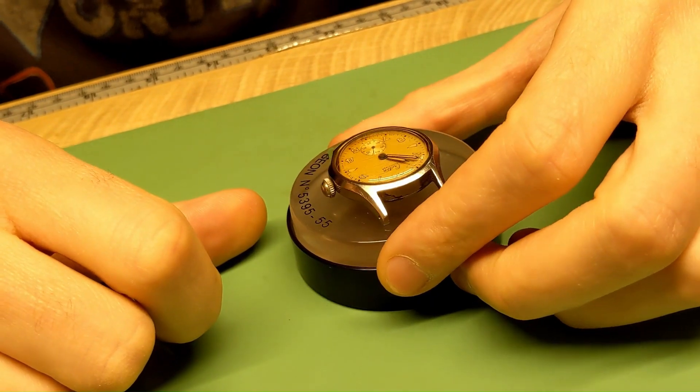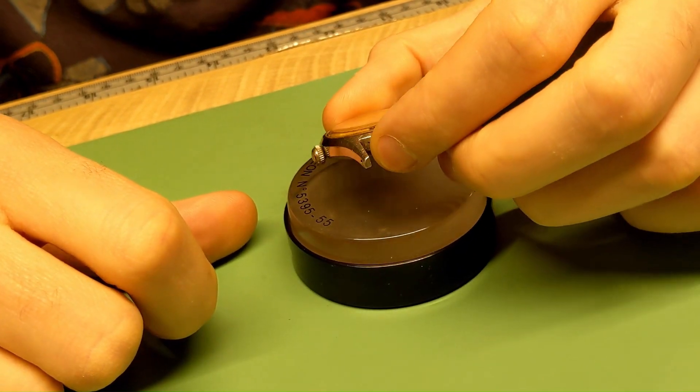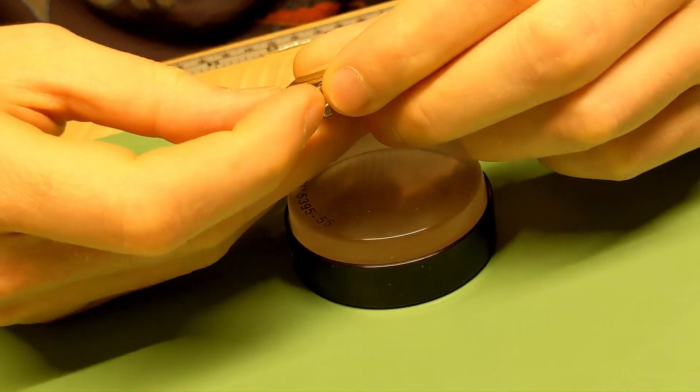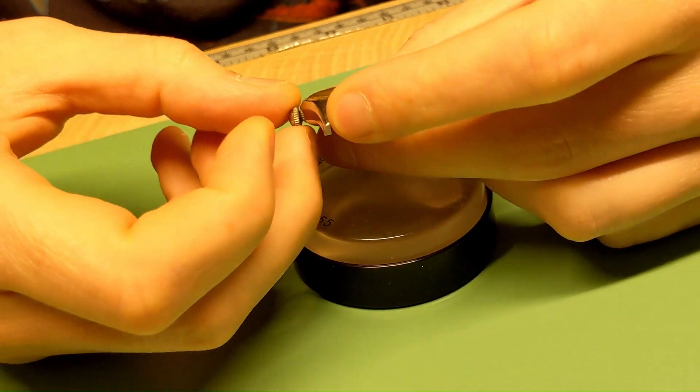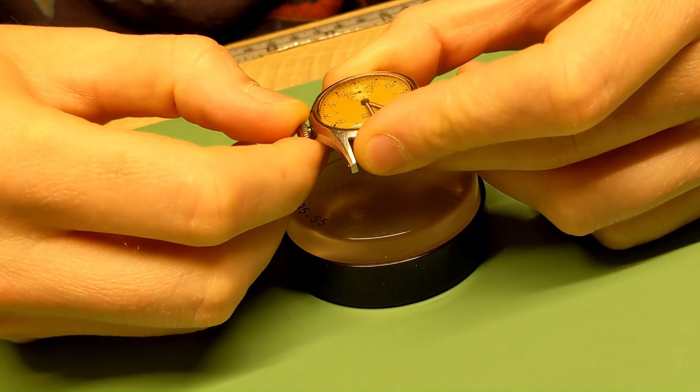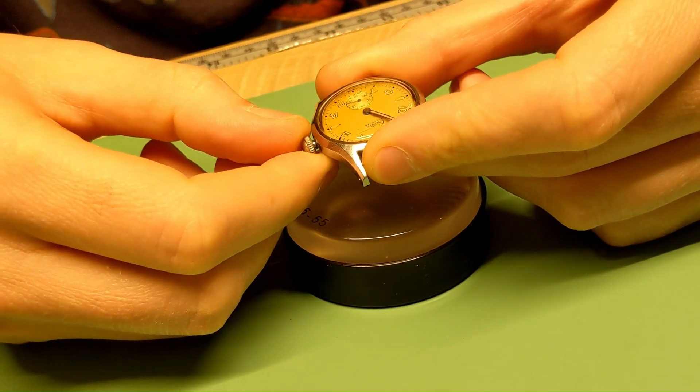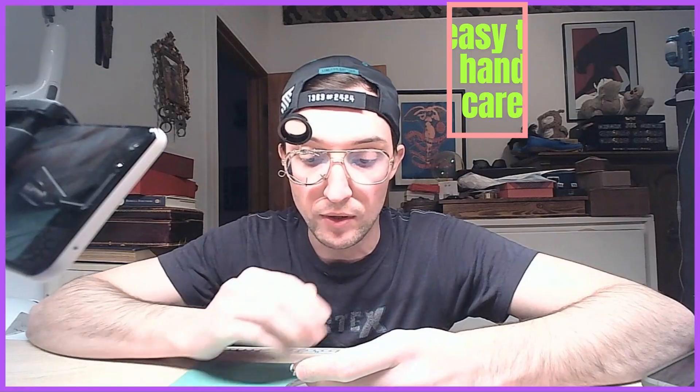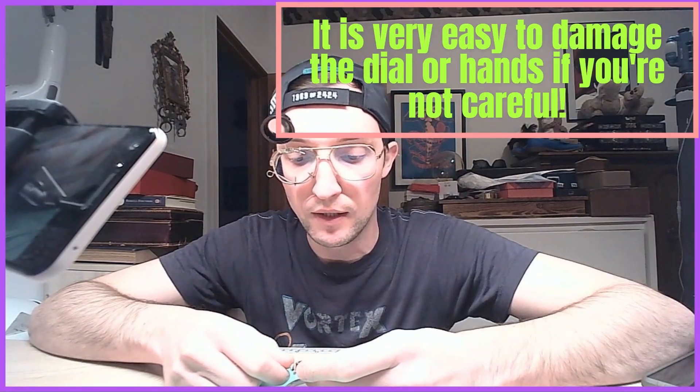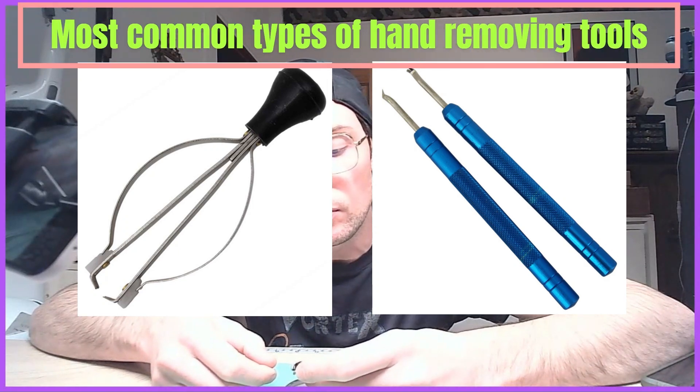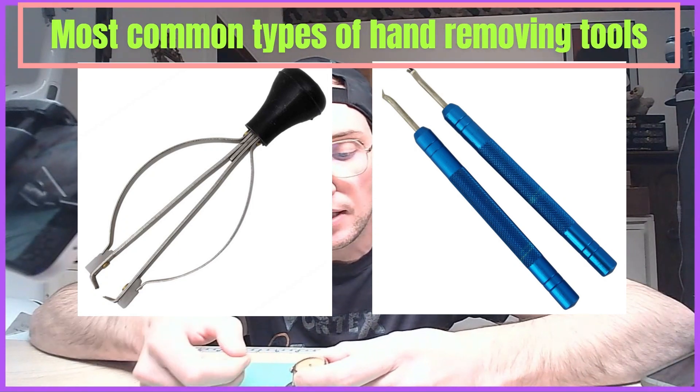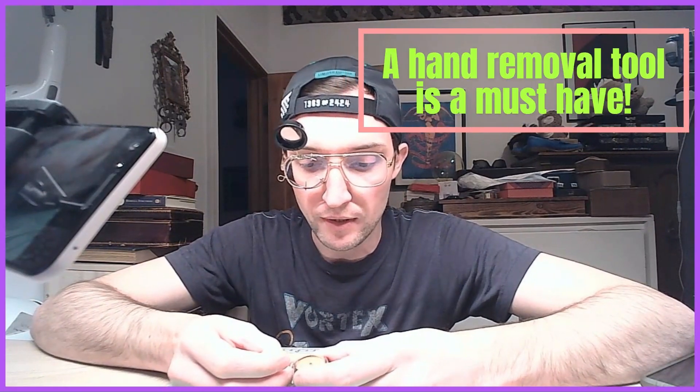Before I remove a movement from the case, just to make hand removal a little bit easier, I make sure the hands are overlapping each other in a straight line. If you've got a seconds hand and the watch isn't ticking, it's good to get them all lined up.